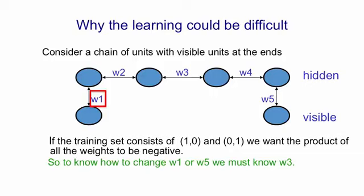What this means is that if we're thinking about learning weight W1, we need to know other weights. So there's W1. To know how to change that weight, we need to know W3, and we need to have information about W3. Because if W3 is negative, what we want to do with W1 is the opposite of what we want to do with W1 if W3 is positive.